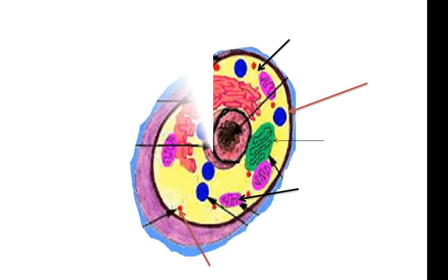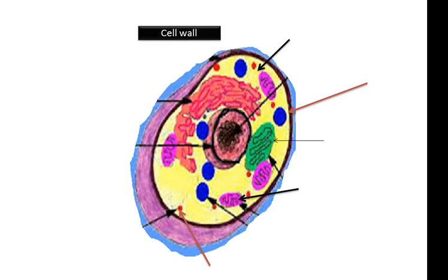Now we want to explain briefly the main structural components of the cell. First, we have the cell wall, or cell membrane. This is a biological membrane that surrounds the cytoplasm, separating the interior of the cell from its outer surrounding environment.